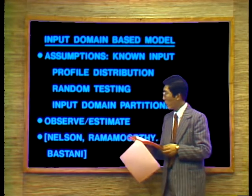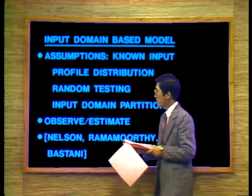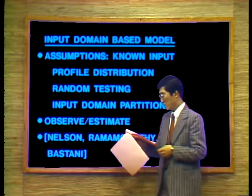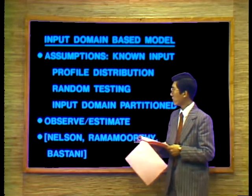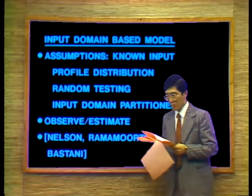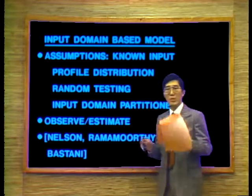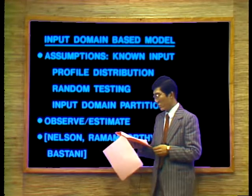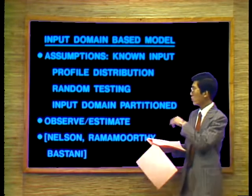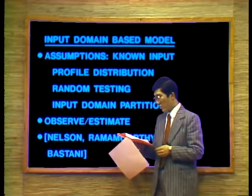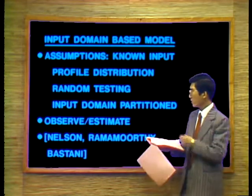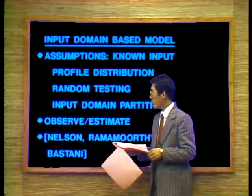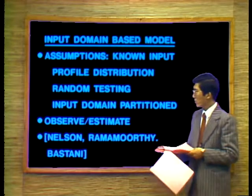Input domain based methods are the last major category of reliability models. Assumptions include: the input profile distribution is known; random testing is performed; and the input domain is partitioned into equivalent classes of subdomains. You generate test cases from each input domain, observe the number of failures, and estimate program reliability. The most notable models in this category include the Nelson model and others.